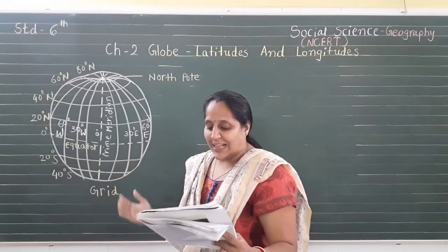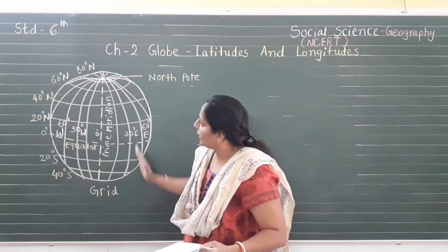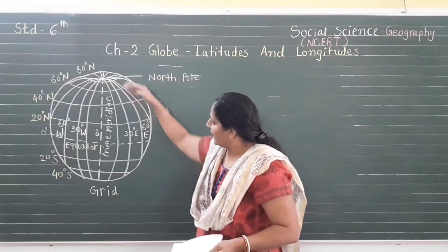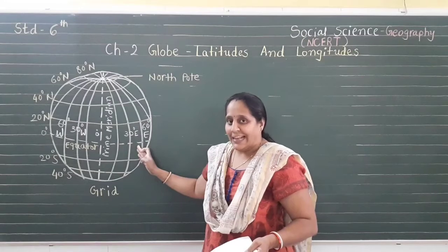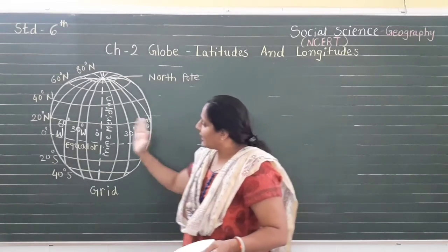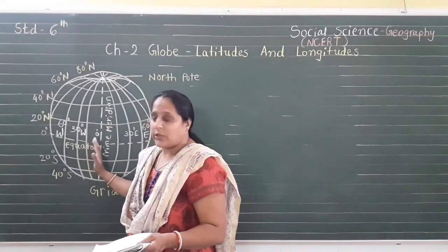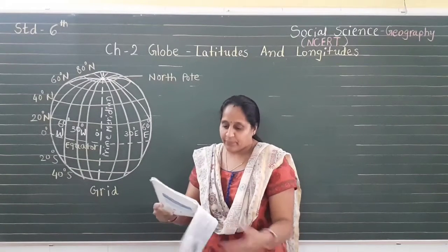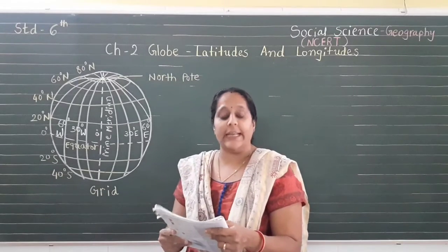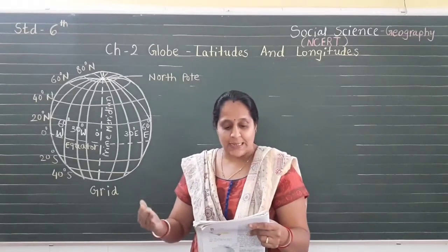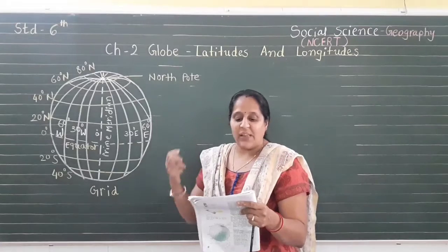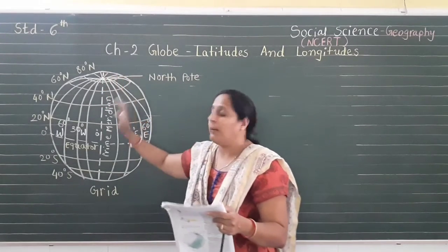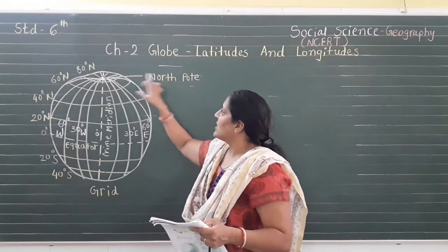These reference lines are called meridians. Some meridians are in the western part and some are in the eastern part — for example, 30 degree east longitude, 60 degree east longitude, 30 degree west longitude, and 60 degree west longitude. The distance between them is measured in degrees of longitude. Each degree is further divided into minutes and each minute into seconds. The distance between meridians decreases polewards until it becomes zero at the north pole.